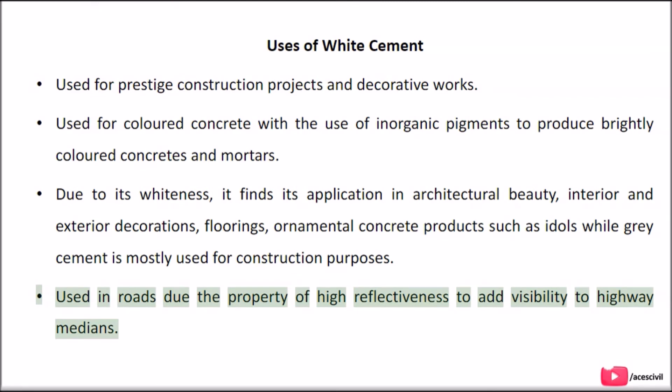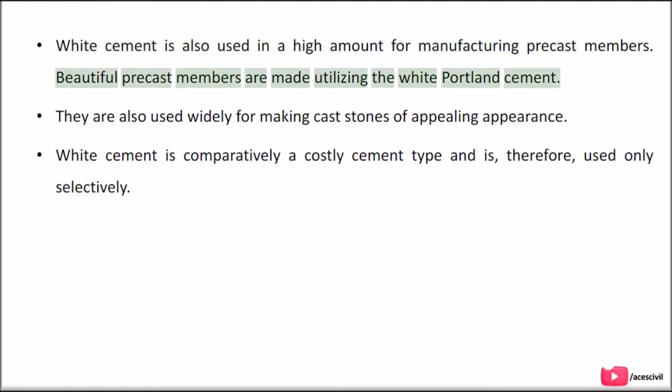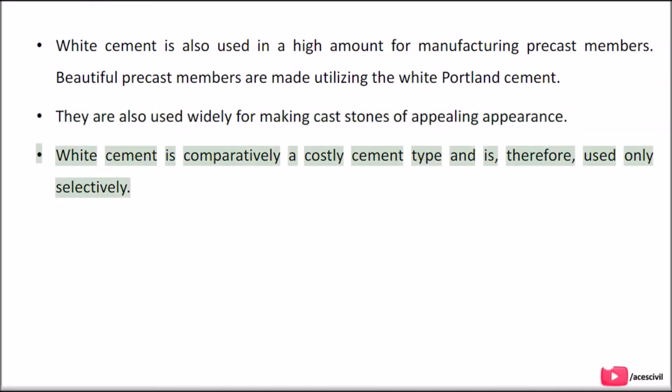White cement is used in roads due to its property of high reflectiveness to add visibility to highway medians. White cement is also used in a high amount for manufacturing precast members. Beautiful precast members are made utilizing White Portland Cement. They are also used widely for making cast stones of appealing appearance. White cement is comparatively a costly cement type and is therefore used only selectively.